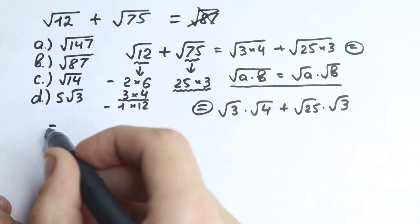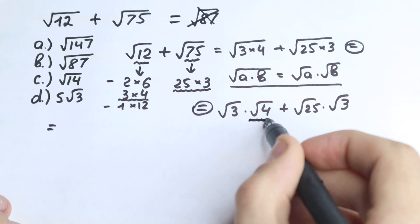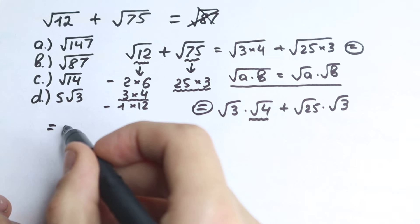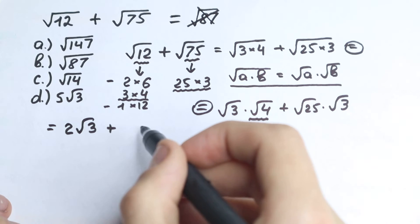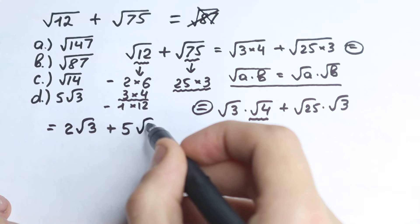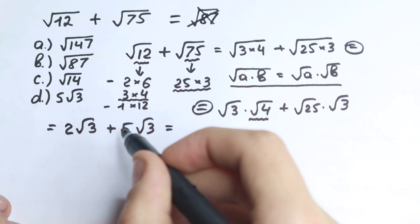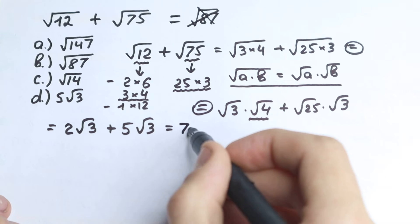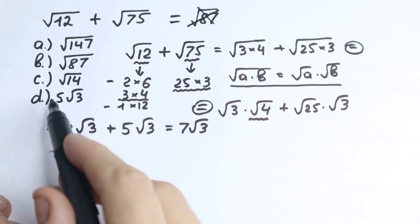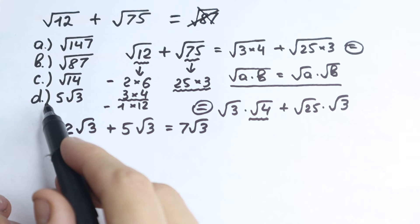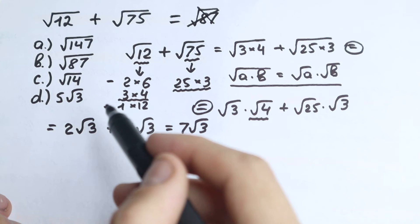Now for the next step: square root of 4 equals 2, so we have 2 times square root of 3. And square root of 25 equals 5, so we have plus 5 times square root of 3. This gives us 2 square root of 3 plus 5 square root of 3, which equals 7 square root of 3. But looking at our options, we don't see 7 square root of 3 listed — that's a bad sign, but this is where the tricky part begins.